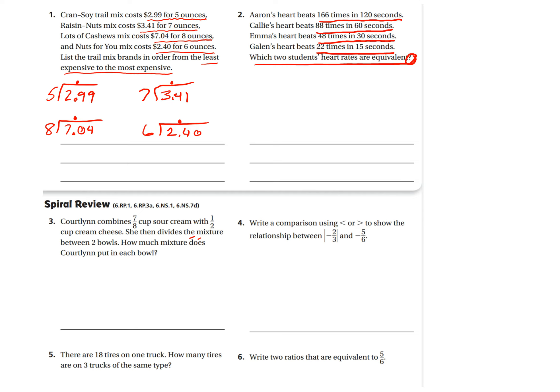Okay. So, again, you can do unit rates for this one. Okay. So, we know it beats 166 times in 120 seconds. Find out how many times it beats, or it beats one time in how many seconds. And then the same thing over here, 88 into 60, 48 into 30, and 22 into 15. And then see which one you get an equivalent or an equal decimal. Okay. An equal number. You're going to have decimals for all of these. And then just do your division. You're going to have to add a zero behind for all of these.